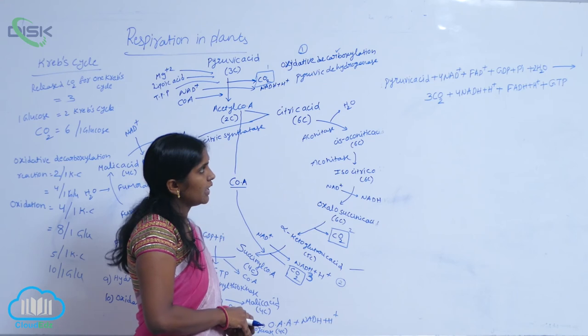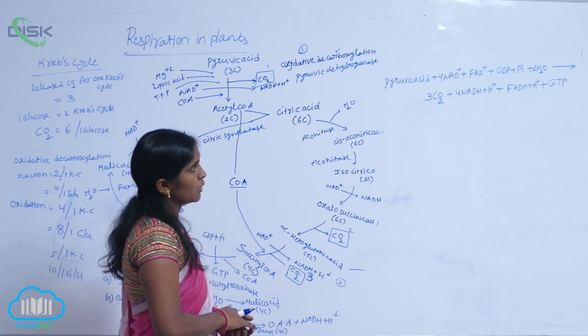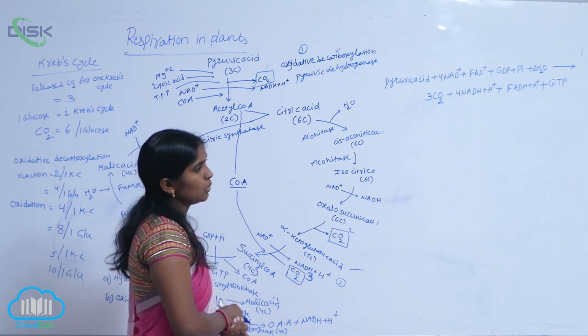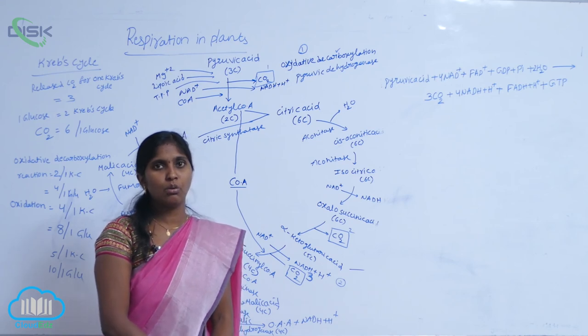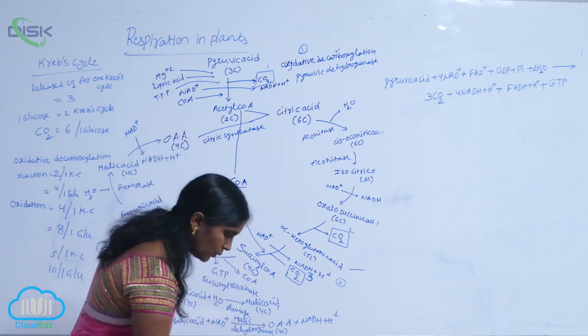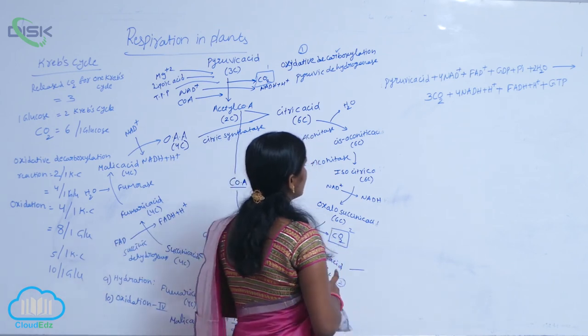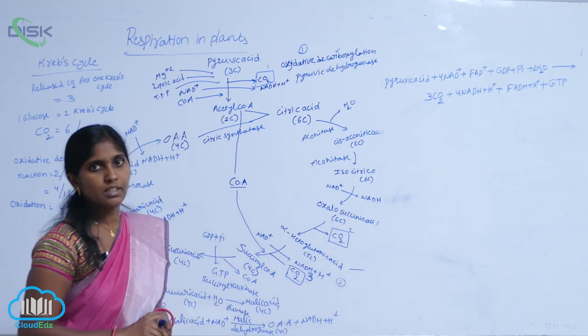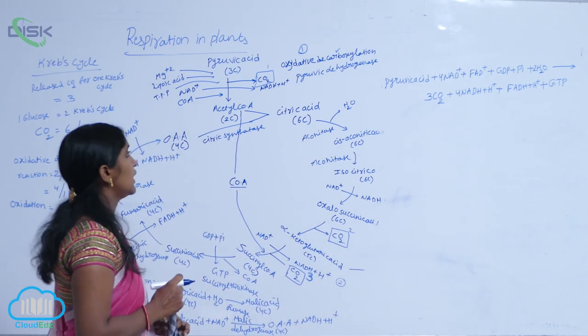4 NADH and H+, 1 FADH2, and 1 GTP molecule is released. And now you come to the energetics of Krebs cycle.